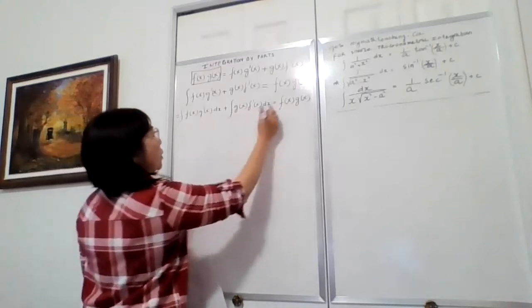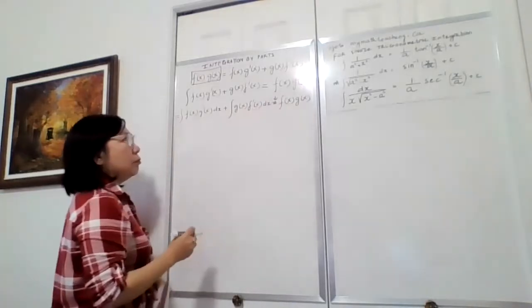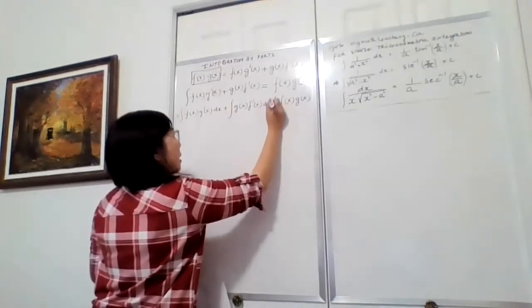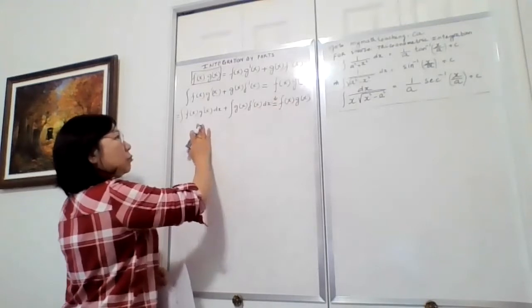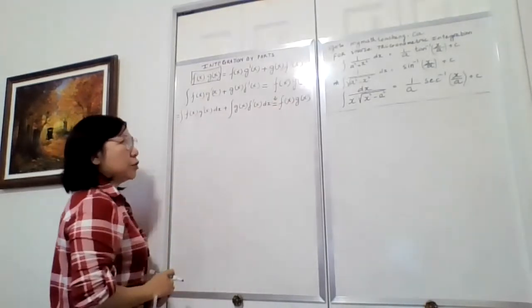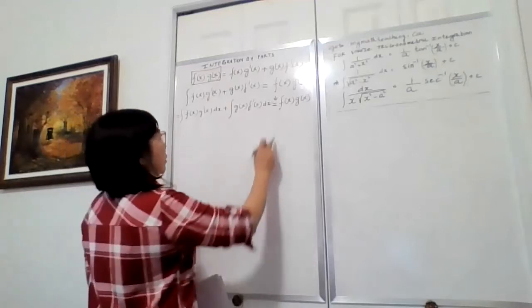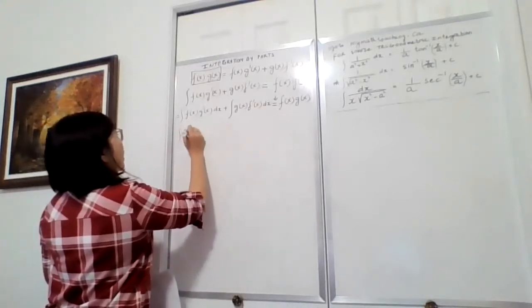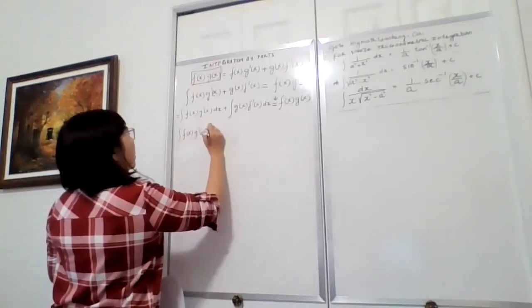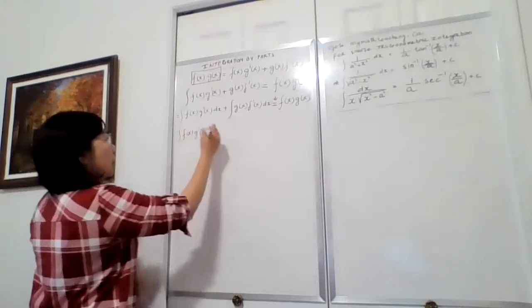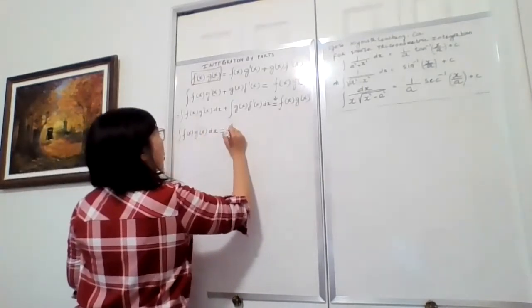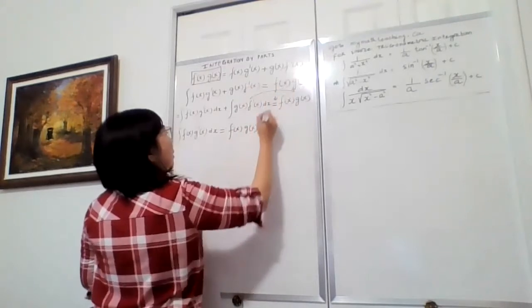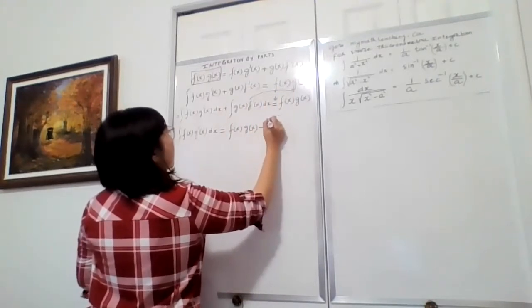In an equation I can also rearrange: I can bring terms from one side to the other, just changing the operation. So now I keep ∫f(x)·g'(x)dx on the left. That will equal f(x)·g(x) on the right-hand side, minus ∫g(x)·f'(x)dx. After rearranging, it still feels confusing with all the f(x) and g'(x) notation.